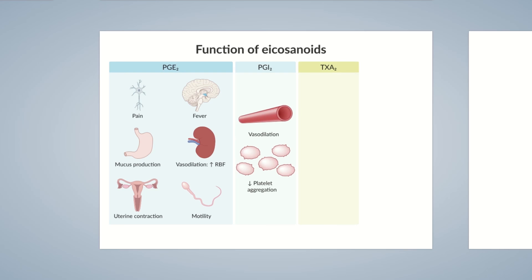Thromboxin A2 is released by activated platelets, resulting in vasoconstriction and platelet aggregation. Accordingly, the origin of the name thromboxin can be traced back to its synthesis in platelets, which are also termed thrombocytes.